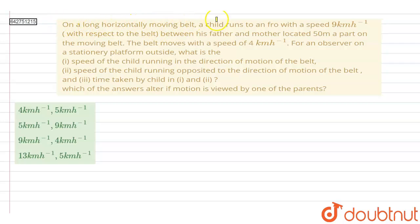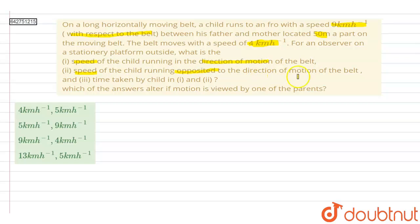Hello everyone. In this question, on a long horizontally moving belt, a child runs to and fro with a speed of 9 km/h with respect to the belt, between his father and mother located 50 meters apart on the moving belt. The belt moves with the speed of 4 km/h. For an observer on a stationary platform outside, what is the speed of the child running in the direction of motion of the belt, speed running opposite to that direction, and the time taken in each case?